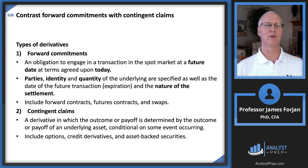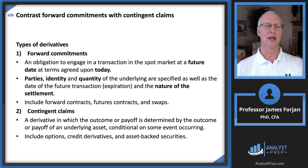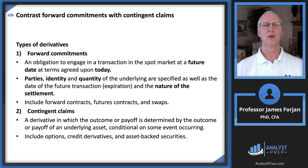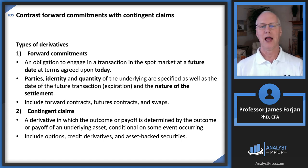Most of us have entered forward contracts when we bought a house. You go to the bank, sign the loan agreement today, and lock in a fixed rate — say 5%. You lock in that rate, but you don't get access to the capital or buy your house for another 30 or 45 days. That's an interest rate forward contract. Other common kinds are currency forward contracts.